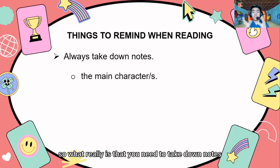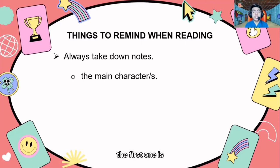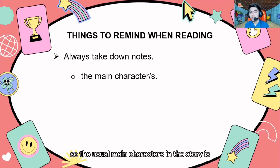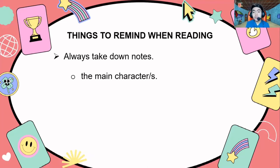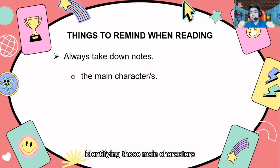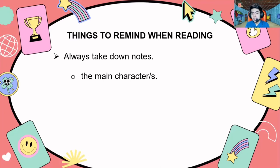So what are the things that you need to take down notes on? The first one is you need to identify and take down notes on the main characters of the story. The usual main characters in a story are names of persons or people — like for example, Mike, Sarah, Jennifer, Jose. By identifying those main characters, you could have a better understanding of the flow of the story.